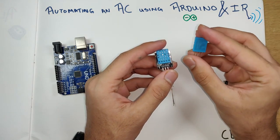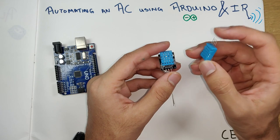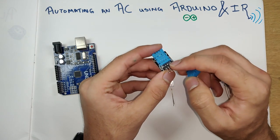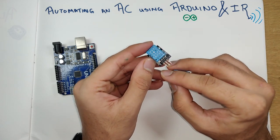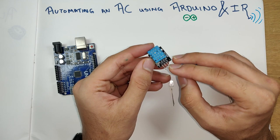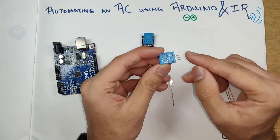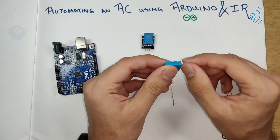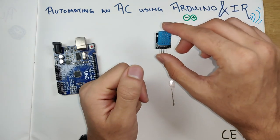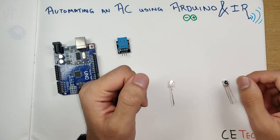To sense temperature and humidity we have the DHT11 sensor. In raw form it has four pins, but only three are used. Those three pins are broken out on the breakout board: the signal pin, the voltage pin, and the ground pin. For this project we'll use the breakout module, but you can go ahead with the raw module as well.